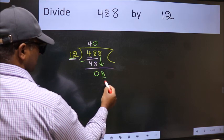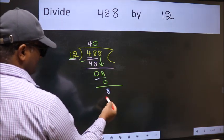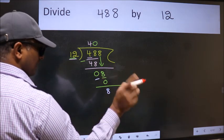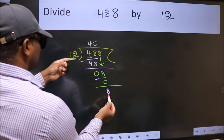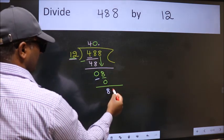So 12 into 0 is 0. Now we subtract, we get 8. Over here, we did not bring any number down, and 8 is smaller than 12. So now we can put dot and take 0.